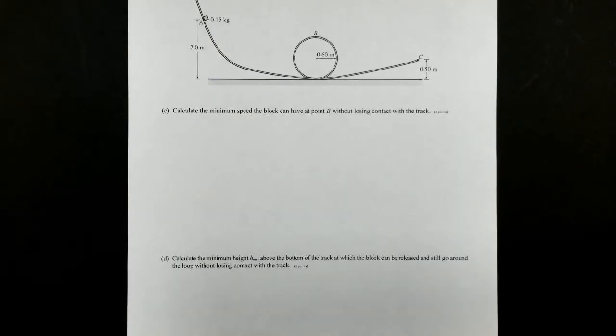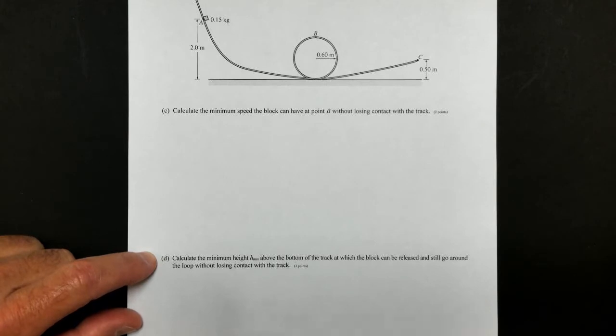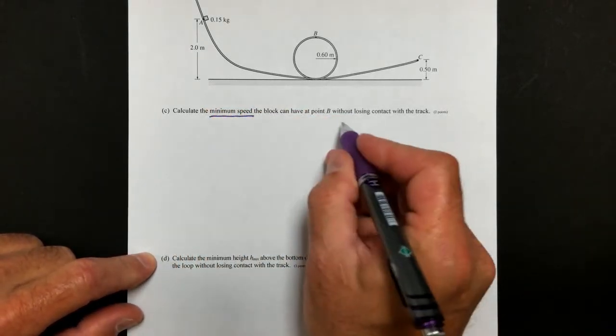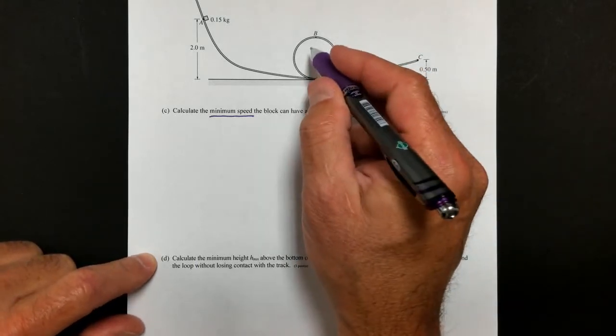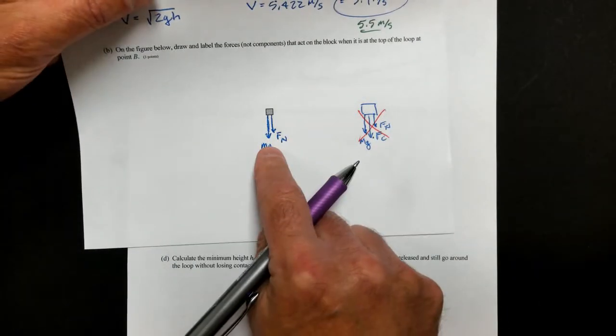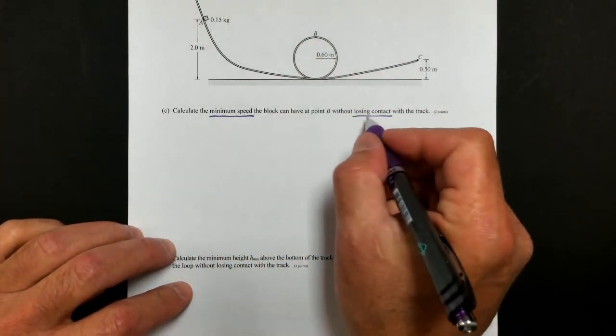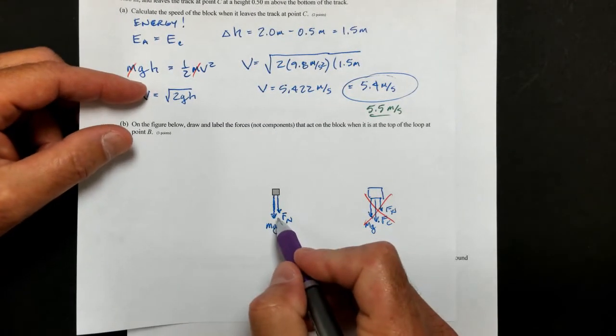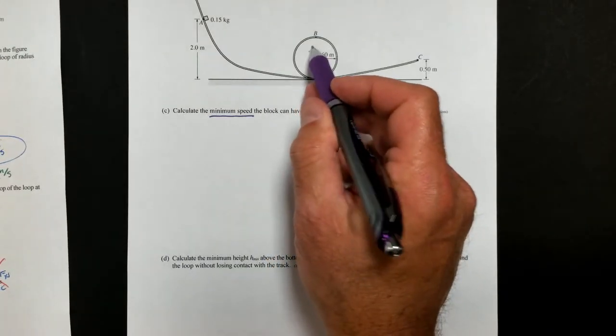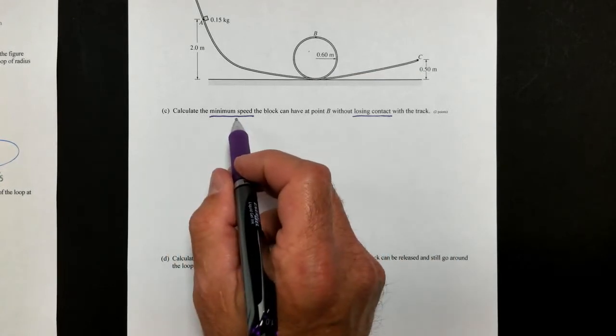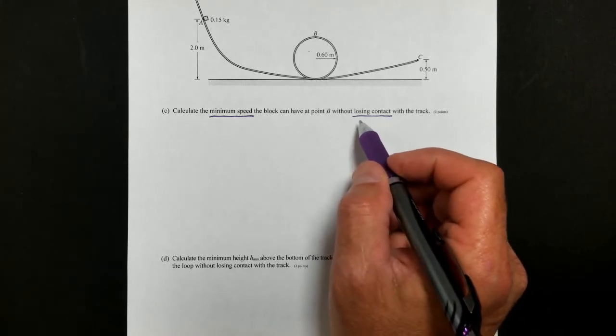Okay, they are nice and give us the diagram again, and they want us to find the minimum speed that it can have at point B when it's going around without losing contact with the track. Now, when we say losing contact, and again, they're clever, and they tell us to talk about forces right before they ask us a question that might have to do with forces on the track. When it loses contact with the track, the force that goes away is going to be the normal force because normal forces are caused by surfaces. And so when we lose contact with the track, the normal force is going to equal zero at that point. So we want to find the minimum speed or the speed at which the normal force just turns to zero so that it loses contact with the track. So we're going to be talking about forces here.